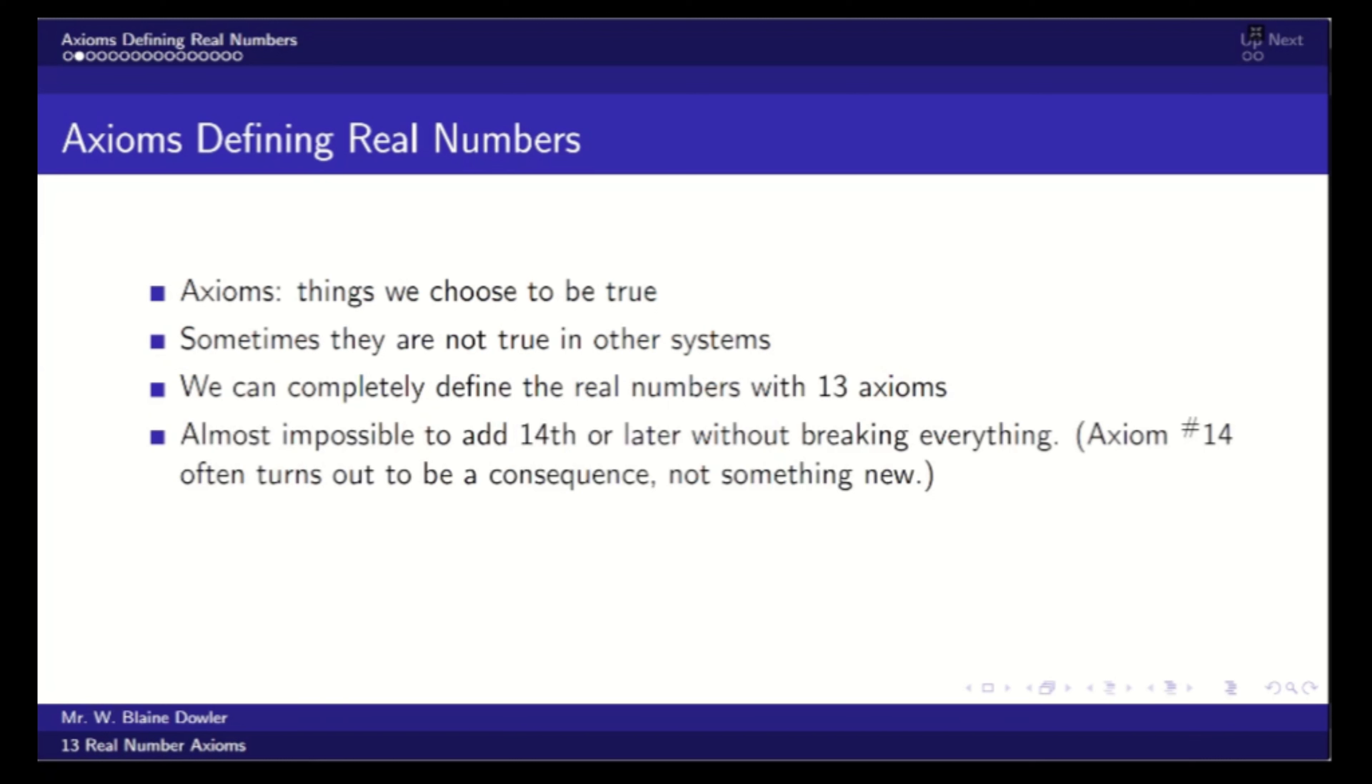In fact, it's almost impossible to add a 14th axiom or more without breaking everything. If we have an axiom that seems to be consistent with these 13, generally speaking, it should not be a standalone axiom, but is in fact a consequence of the first 13. More advanced and difficult algebras are usually made by taking these axioms away and not by adding to them.